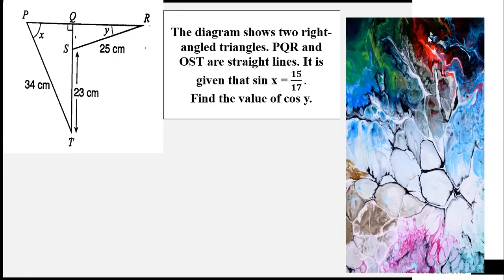The diagram shows two right-angled triangles. PQR and QST are straight lines. It is given that sin x is equal to 15 over 17. Find the value of cos y.